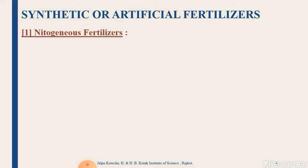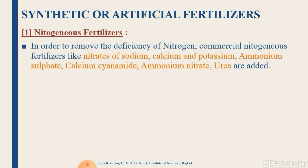Hello everyone. Let us see the types of synthetic fertilizers — basically nitrogenous fertilizers, phosphatic fertilizers, potash fertilizers, and NPK or mixed fertilizers. Starting with nitrogenous fertilizers: to remove the deficiency of nitrogen, commercial nitrogenous fertilizers like sodium nitrate, calcium nitrate, potassium nitrate, ammonium sulfate, calcium cyanamide, ammonium nitrate, and urea can be added. Generally, we add fertilizer to improve the fertility of the soil and hence improve the growth of the plants.